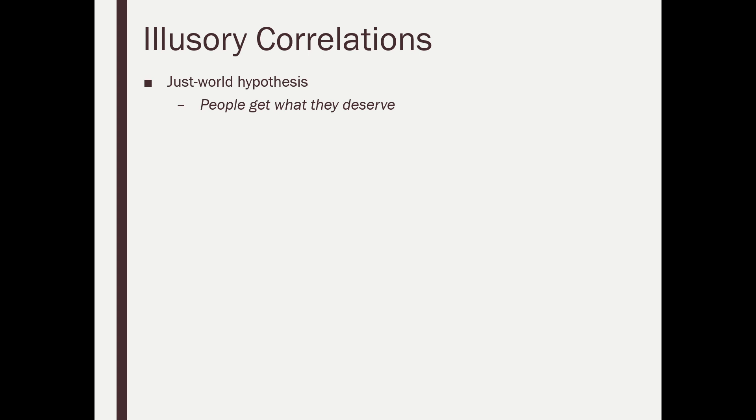We call that karma. Put bad things out, bad things will come back. This idea that if something good happens to a person, they must somehow have deserved it. If something bad happens to them, they must have somehow deserved it, right? They must've brought it on themselves. People get what they deserve is the just world hypothesis.